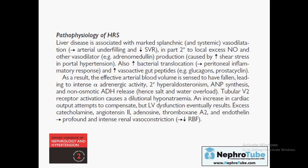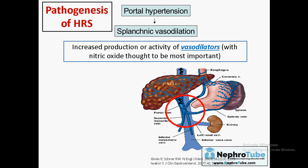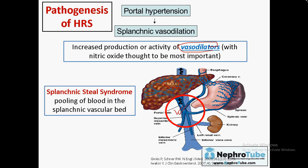What is the pathophysiology of hepatorenal syndrome? The pathophysiology is important because according to it, we will treat the patient with different measures. In cirrhosis, portal hypertension leads to splanchnic vasodilation — dilation of GIT vessels — because when pressure increases in the portal vein, this leads to increased production or activity of vasodilators such as nitric oxide, to decrease the pressure in the splanchnic and portal area.